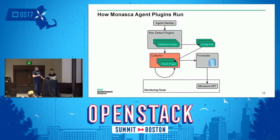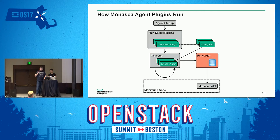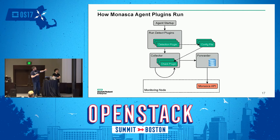The check plugins go off and gather whatever information they need, then that gets collected by the collector, which on a scheduled interval pushes it to the forwarder, which packages it up and pushes it to the Monasca API so Monasca as a whole can process it. The API is marked separately because it can belong to a node beyond the monitoring node we're actually running on.